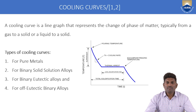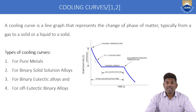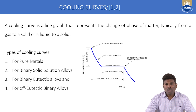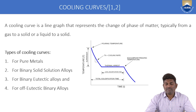Coming to the cooling curves, what is a cooling curve? Generally, a cooling curve is a line graph that represents the change of phase of matter, typically from a gas to a solid or liquid to a solid. This cooling curve represents the change of phase from gas to solid or liquid to solid. When any material is changing phase, this cooling curve is very useful to represent that change of phase in terms of a line graph.